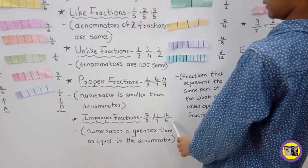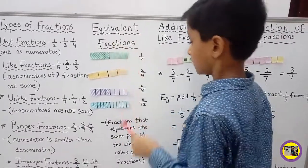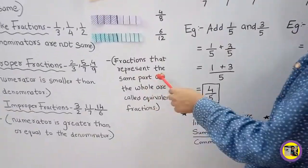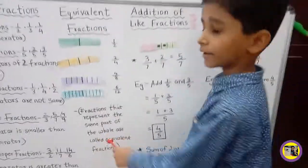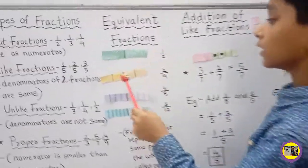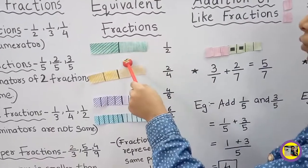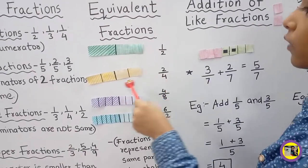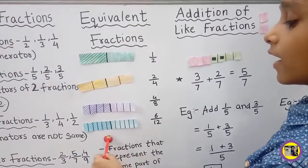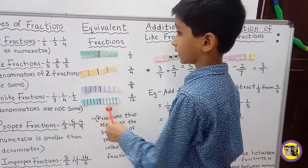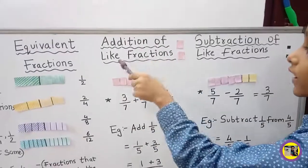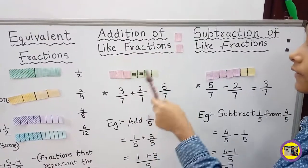Equivalent Fraction: Fractions that represent the same part of the whole are called equivalent fractions. Let's learn through this model: 1 upon 2, 2 upon 4, 4 upon 8, 6 upon 12. These all represent the same part of the whole.